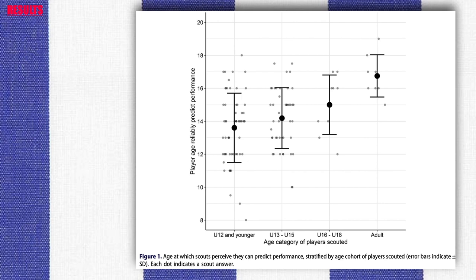Interestingly, most of the scouts observed players in the U12 and younger cohort. Thus, the largest group of scouts perceived they could predict future performance for players that were older than the players they typically observed in practice.